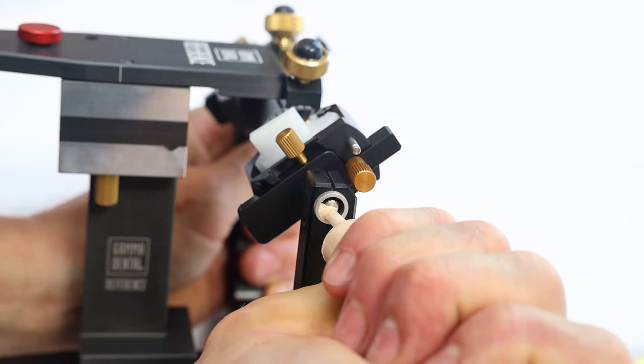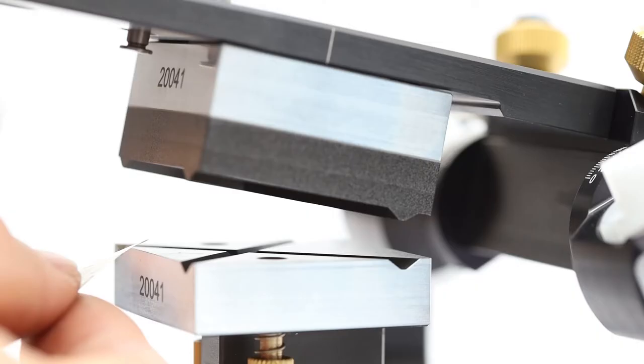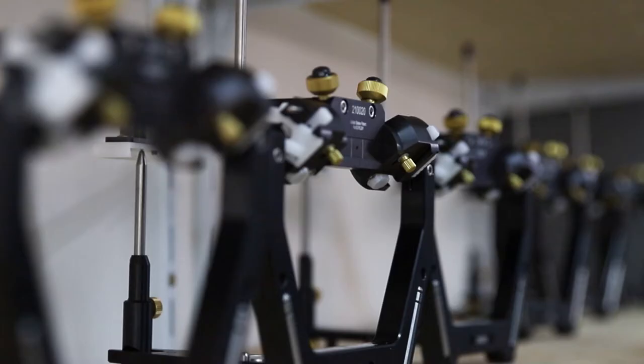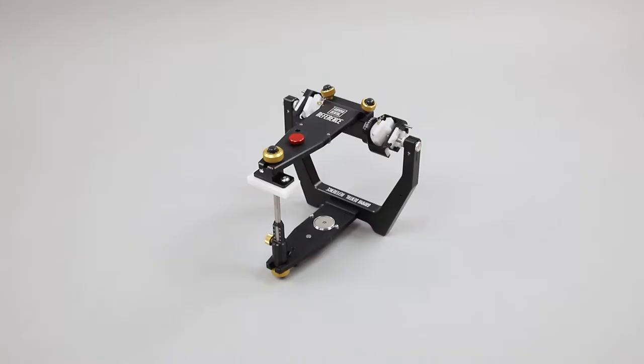An articulator, in general, is a device used in dentistry to which plaster casts of the maxillary and mandibular jaw are fixed, reproducing some or all the movements of the mandible in relation to the maxilla.